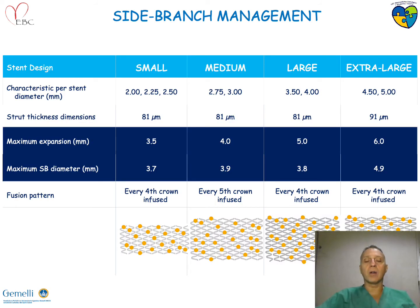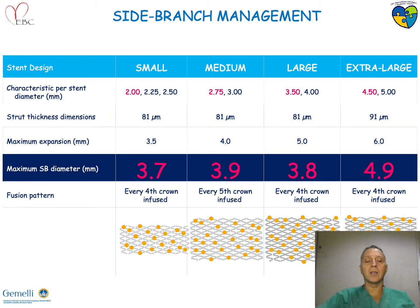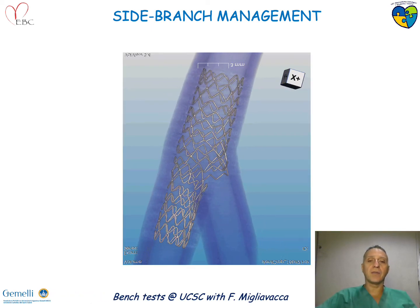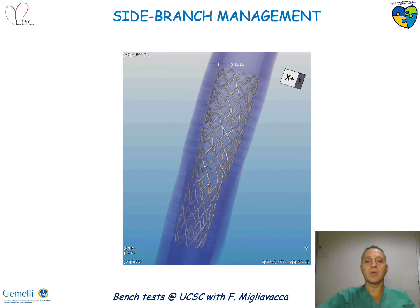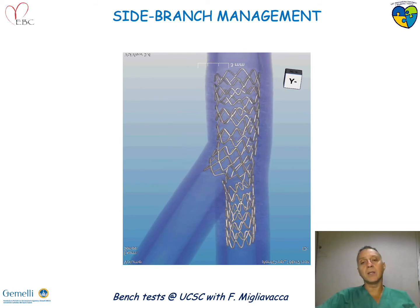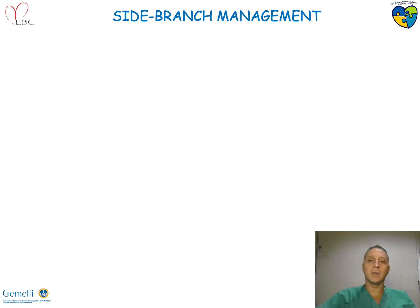How great is this opening? This is the maximum side branch diameter expansion — really huge side branches can be treated by perfect stent strut removal. And this is the final aspect we may have with the POT, with the kissing balloon, and the EPOT.